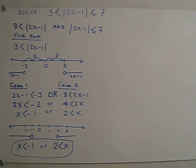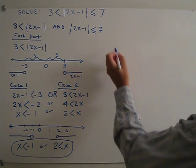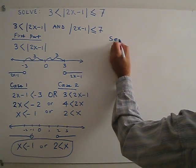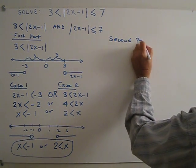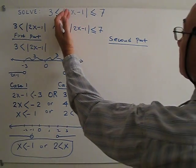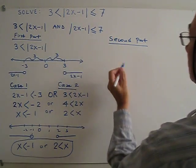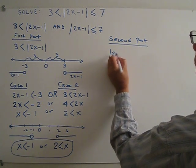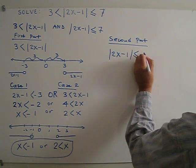Now let's do the second part. The second part is the absolute value of 2x minus 1 less than or equal to 7. If I put this on the number line — this is the number line, this is the origin, negative 7 and positive 7.